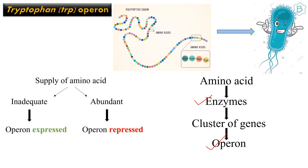Based on the supply of an amino acid, an operon can be expressed or repressed. If an amino acid is inadequate, the operon will be expressed, and if it is abundant, the operon will be repressed.